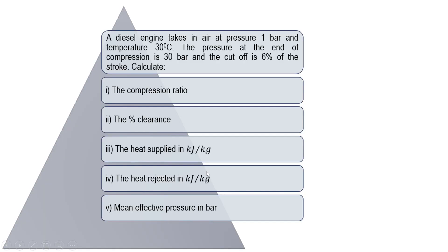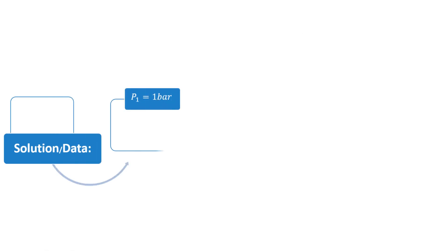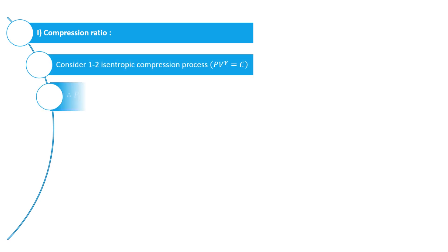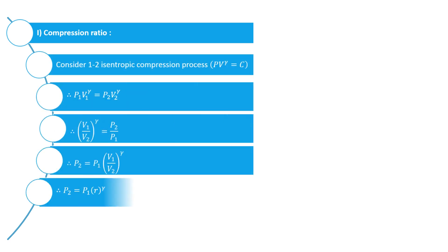Now let us start with the problem statement. A diesel engine takes in air at a pressure of 1 bar and temperature of 30 degrees centigrade. The pressure at the end of compression is 30 bar and cutoff is 6% of the stroke. We have to calculate compression ratio, percentage clearance, heat supplied, heat rejected, and mean effective pressure — all easily found using the Excel calculator.